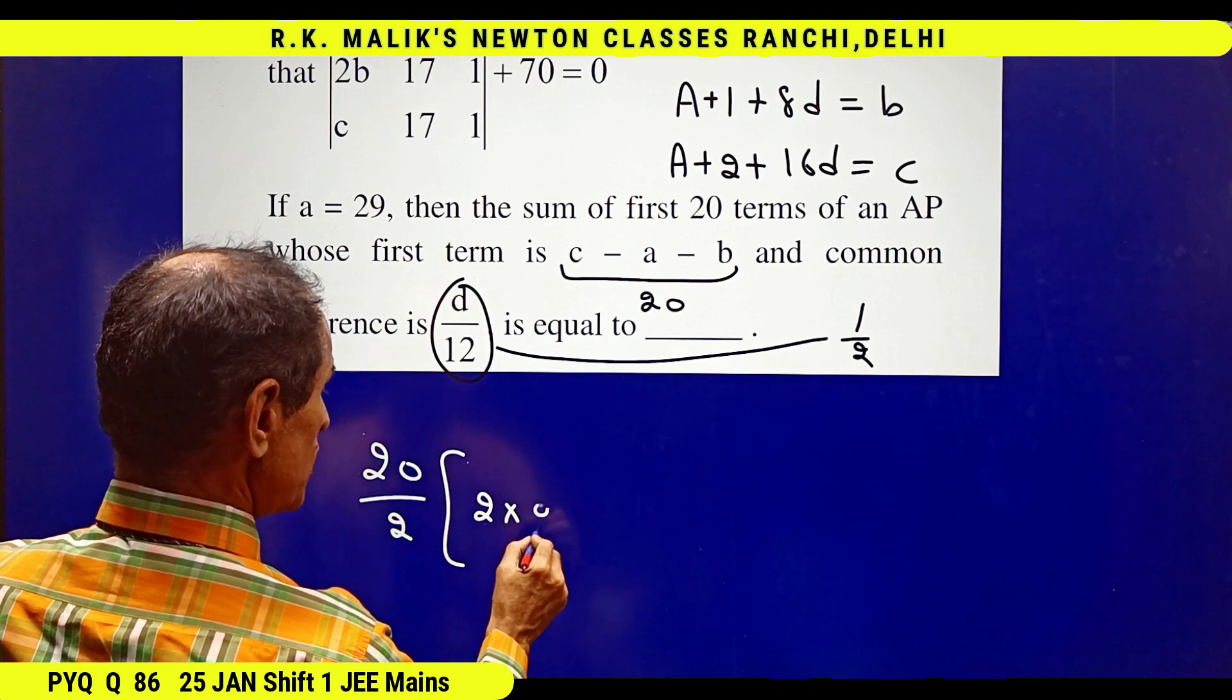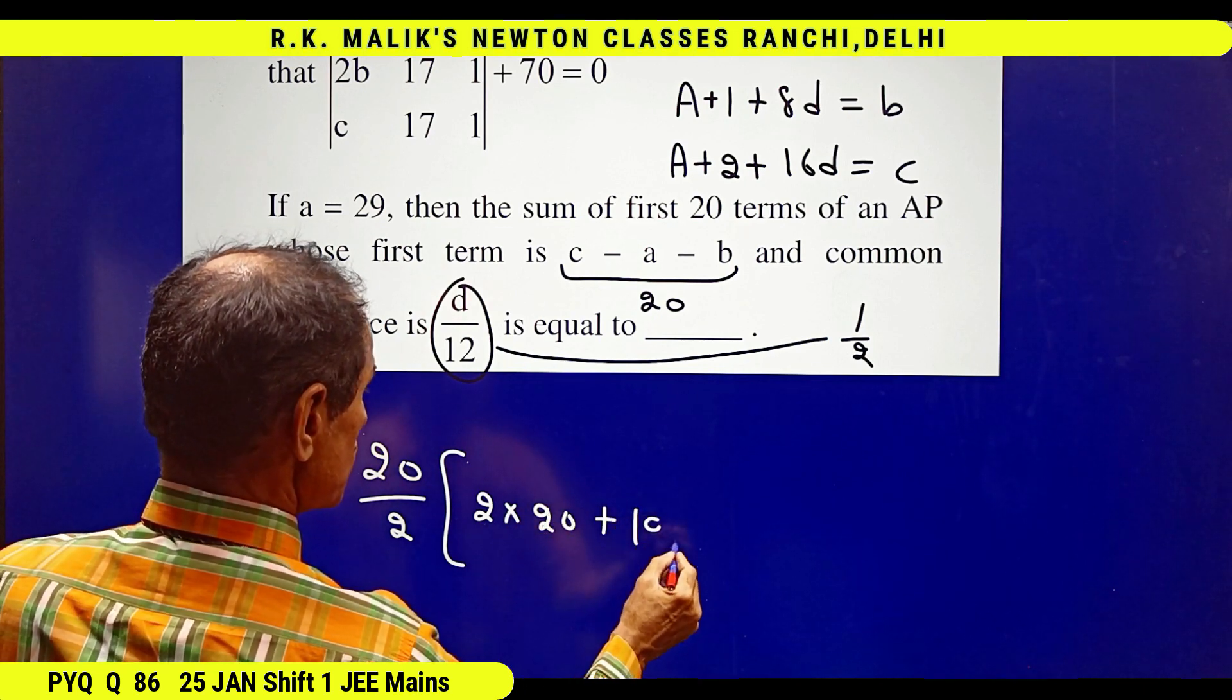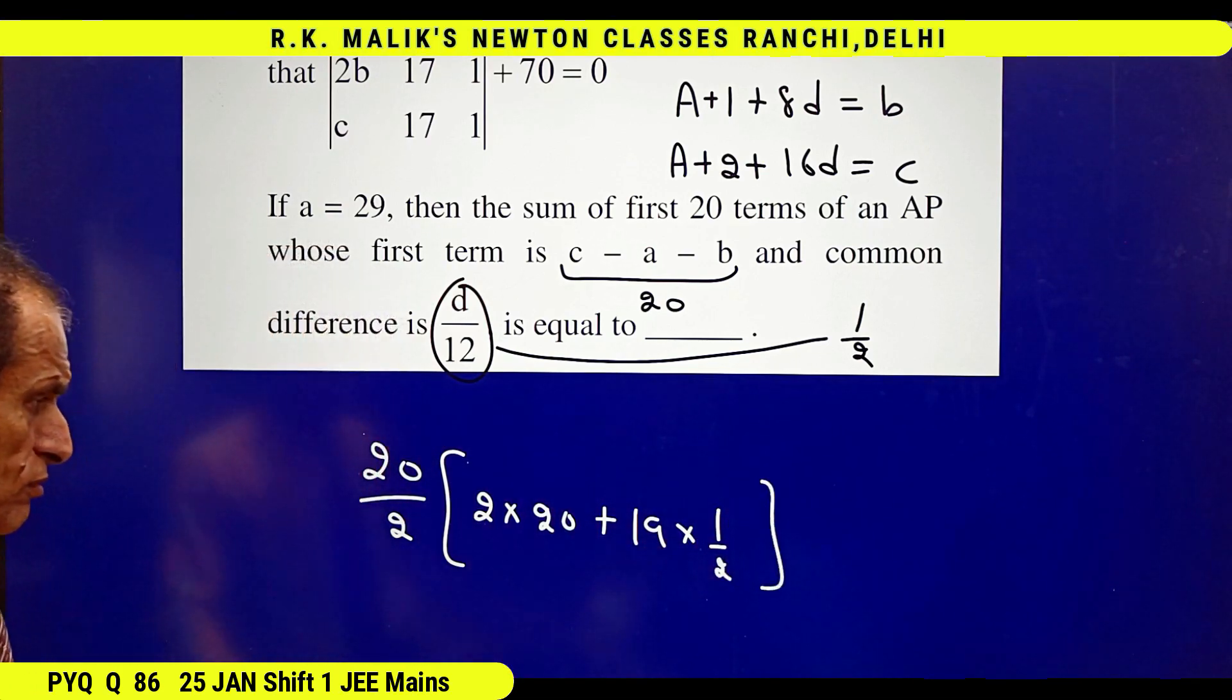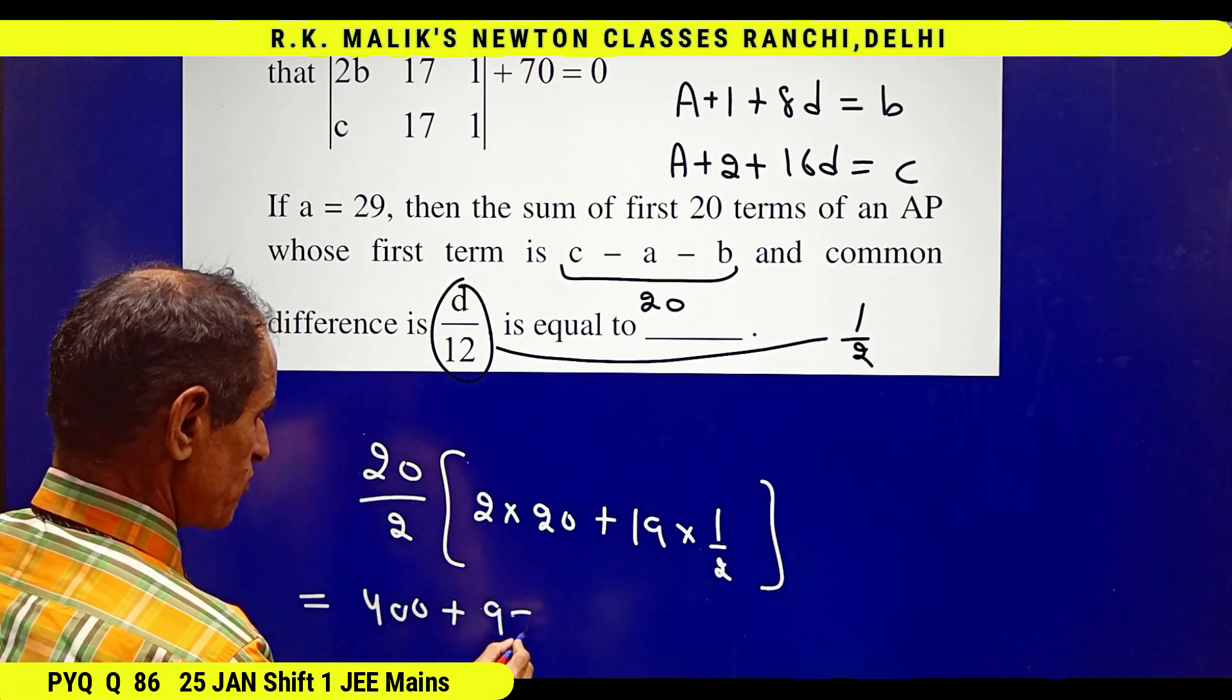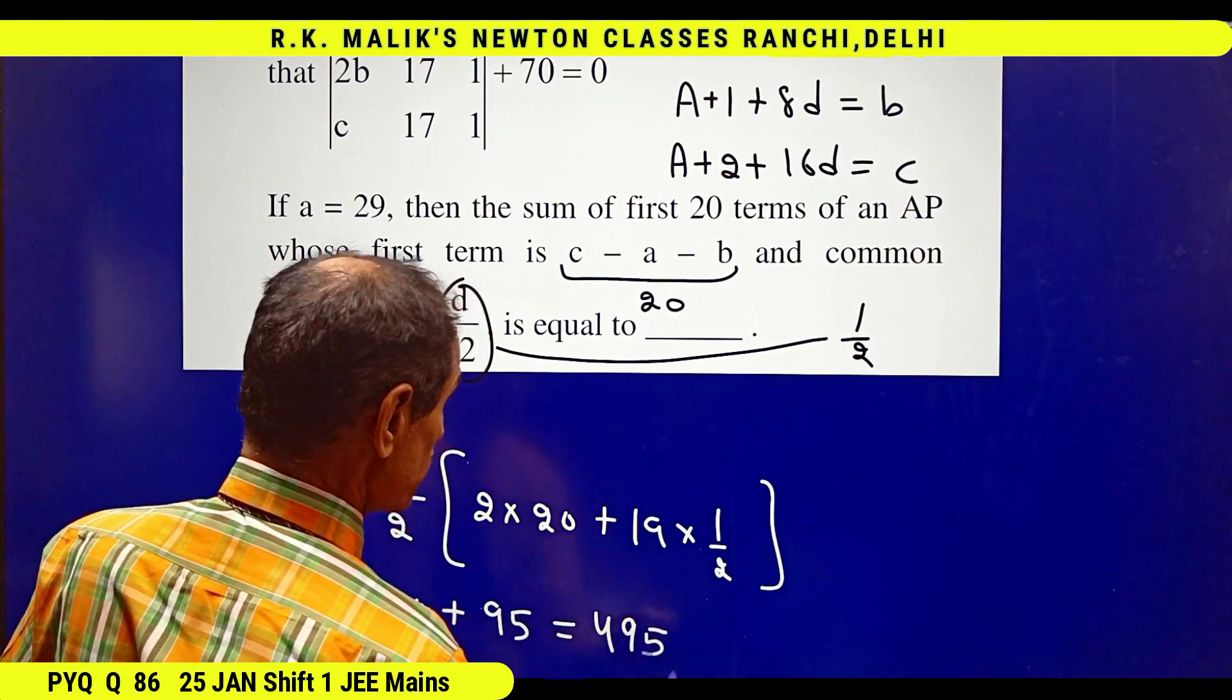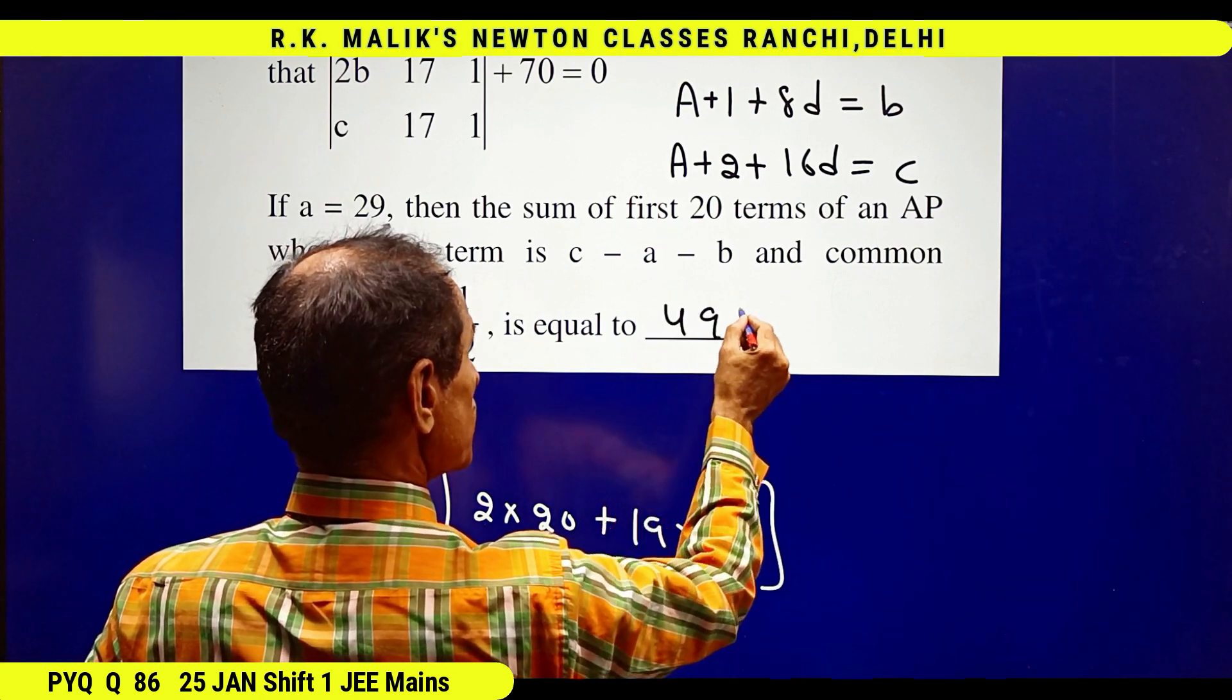This equals 400 plus 95, that is 495 is the answer. Hence we have got the answer 495.